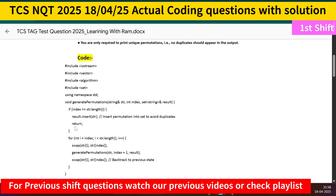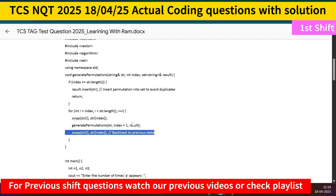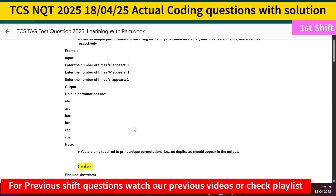In the recursive approach: the base case is when index equals string length — add the current string to the result set to avoid duplicates. Then loop from i = index to i less than string length, swap str[i] and str[index], recursively call generate_permutation, then backtrack to the previous state by swapping back. This is a straightforward recursion-based permutation approach.